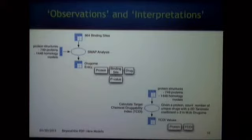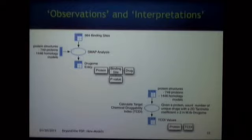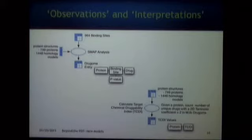Very interestingly, this wasn't actually described in the paper's method section — it was described in the results. From this representation of the interaction between a protein and a drug, you can calculate a value called TCDI — the Target Chemical Drug-ability Index — which in my mind was the punchline of the paper. This is the structure of a nanopublication that would arise from the drug-ohm: a dataset that allows you to make all of those assertions and gives you a model you can process to calculate something practically useful.